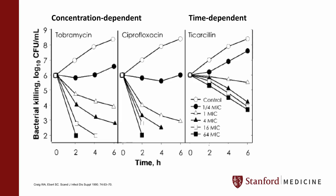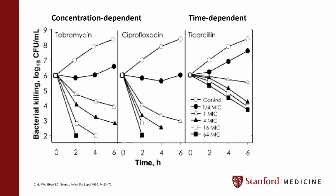Here is an example of the bactericidal effect of varying drug concentrations for a concentration-dependent antibiotic compared to a time-dependent antibiotic on a strain of Pseudomonas aeruginosa. As shown in the first two graphs, tobramycin and ciprofloxacin display a concentration-dependent pattern of bactericidal activity — as concentrations above the MIC increase, the rate and extent of bacterial killing also increases. In contrast, ticarcillin displays a time-dependent pattern; increasing concentration results in increased bacterial kill, however not to the same extent. The additional bacterial kill between concentrations four times over the MIC compared to 64 times over the MIC for ticarcillin are minimal compared to the concentration-dependent activity of tobramycin.